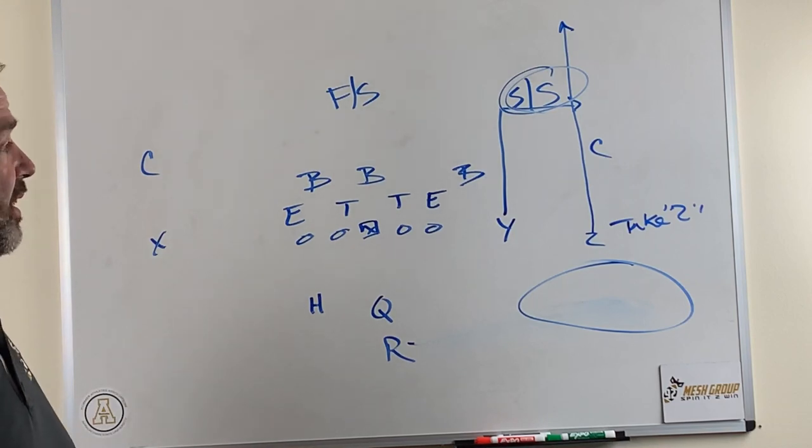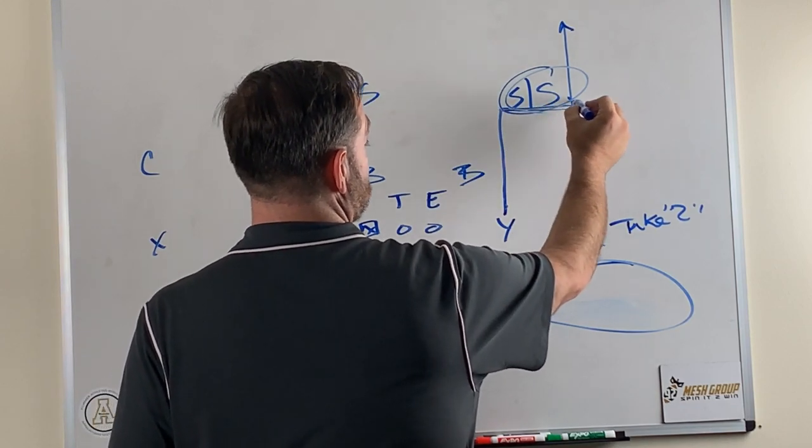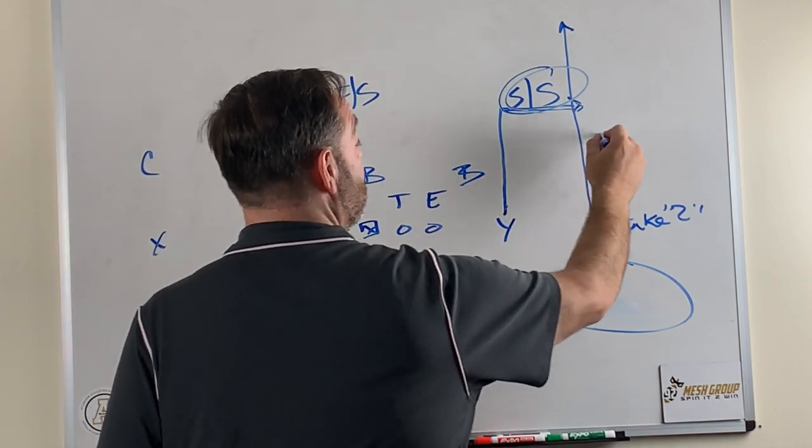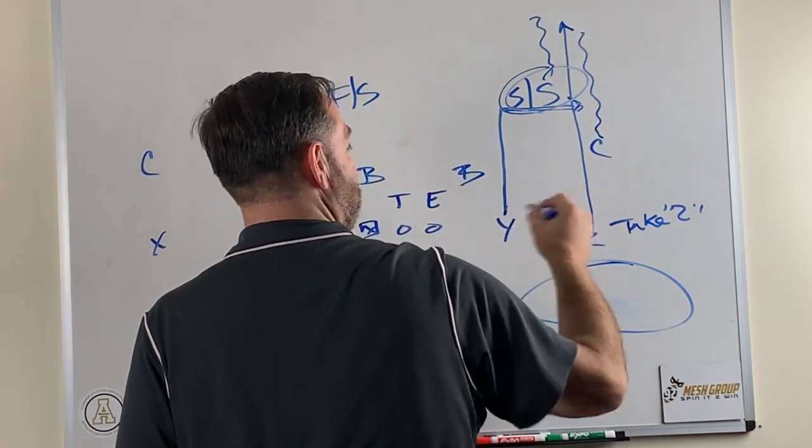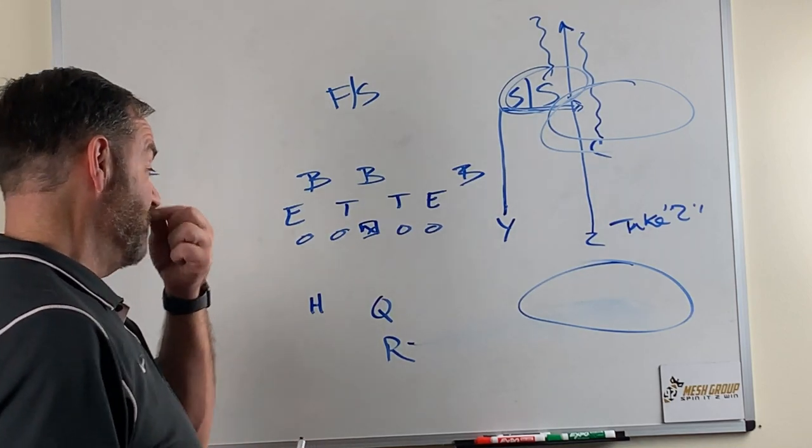I want him to run dead at this strong safety, which forces him to get covered. But what also happens is if the strong safety is bound and determined to be on man, it's going to open up the inside of that field. But really what we want him to do is take those two guys and give us that piece of grass right there in the two by one.